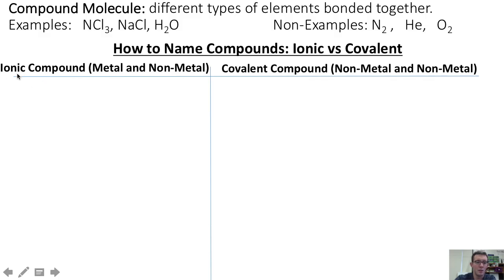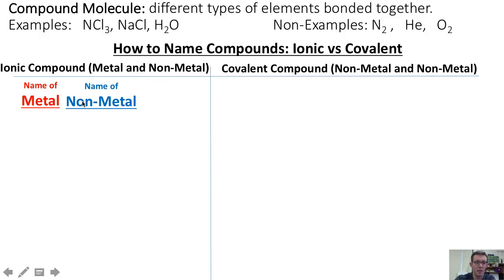To name an ionic compound, chemists will place the name of the metal in front of the name of the nonmetal and then add the suffix "-ide" to show that the metal and the nonmetal have been bonded together.